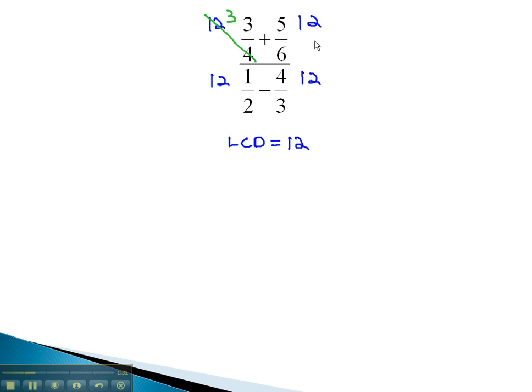12 over 4 is 3. 12 over 6 is 2. 12 over 2 is 6. And 12 over 3 is 4.